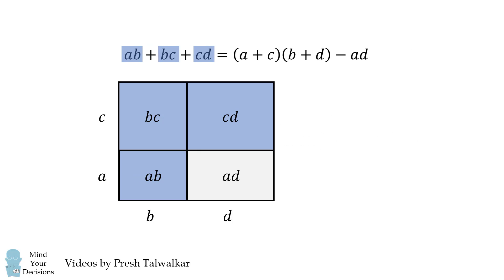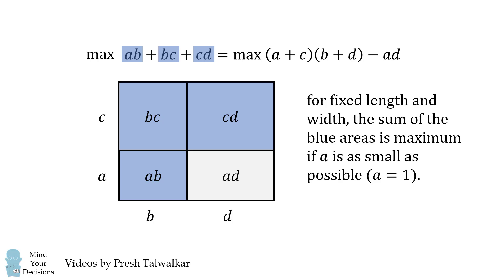How is that going to help us? Well, to maximize the blue areas, we can equivalently maximize the area of this rectangle, minus AD. We can then use some geometric insight. For a fixed length and width, the sum of the blue areas is maximum if A is as small as possible.